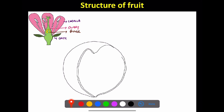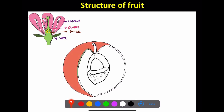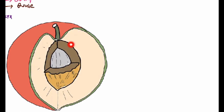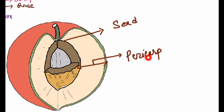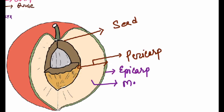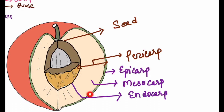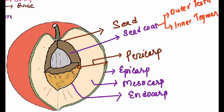We will make a simple diagram of a fruit. The main parts of a fruit include the pericarp and the seed. The seed has a seed coat which can be divided into two layers: the outer part of the seed coat is called the testa and the inner part is called the tegmen.